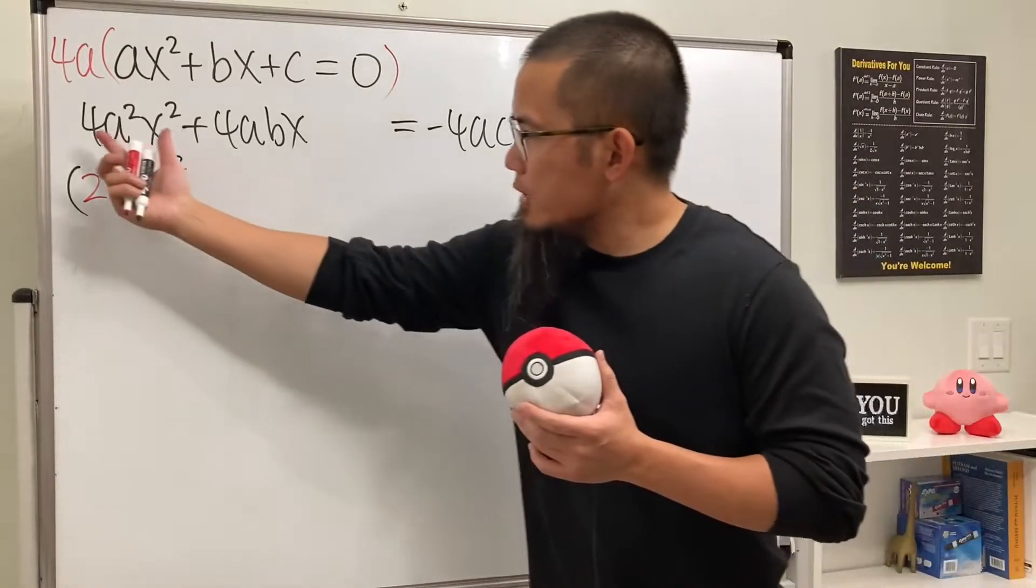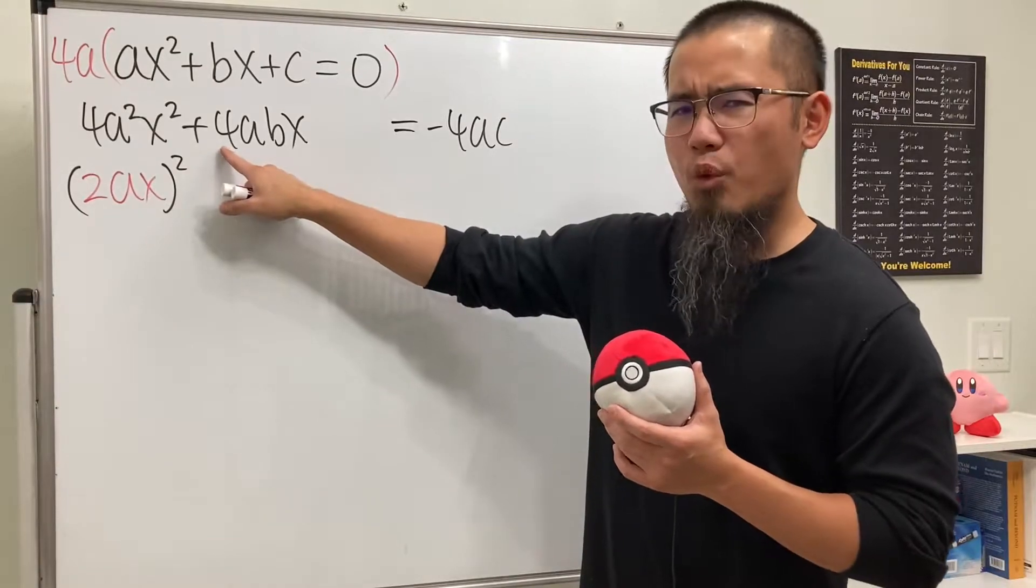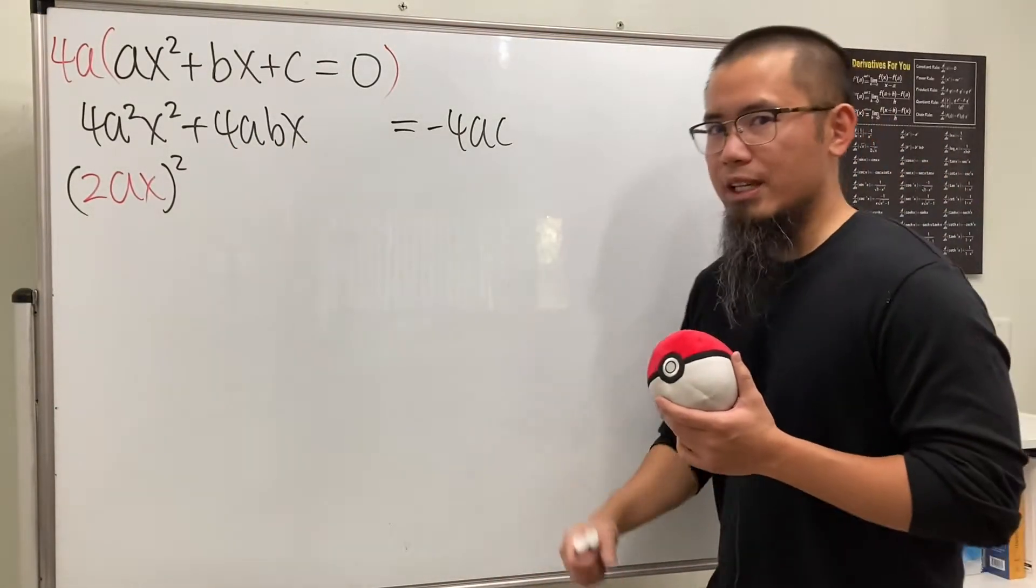So the first part right here is something to the second power. And for the second part, if you look at this, we have 4. I'm going to break that down. Now, let me show you guys what exactly we are trying to aim for.